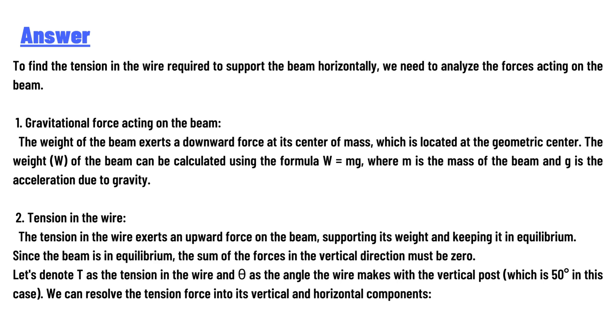The weight of the beam exerts a downward force at its center of mass, which is located at the geometric center. The weight W of the beam can be calculated using the formula W = mg, where m is the mass of the beam and g is the acceleration due to gravity. Second, tension in the wire.